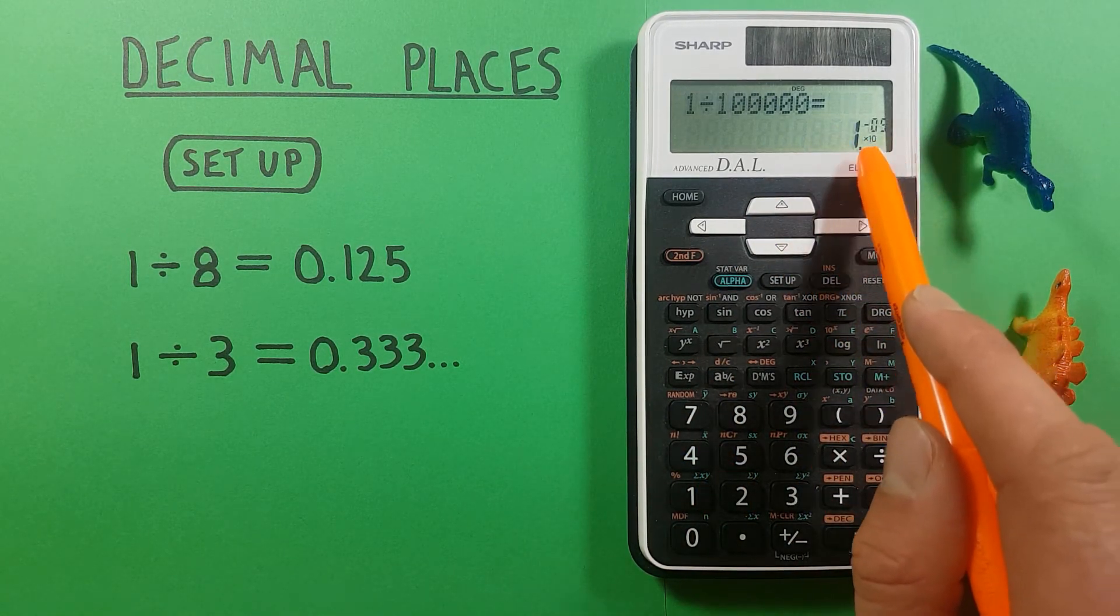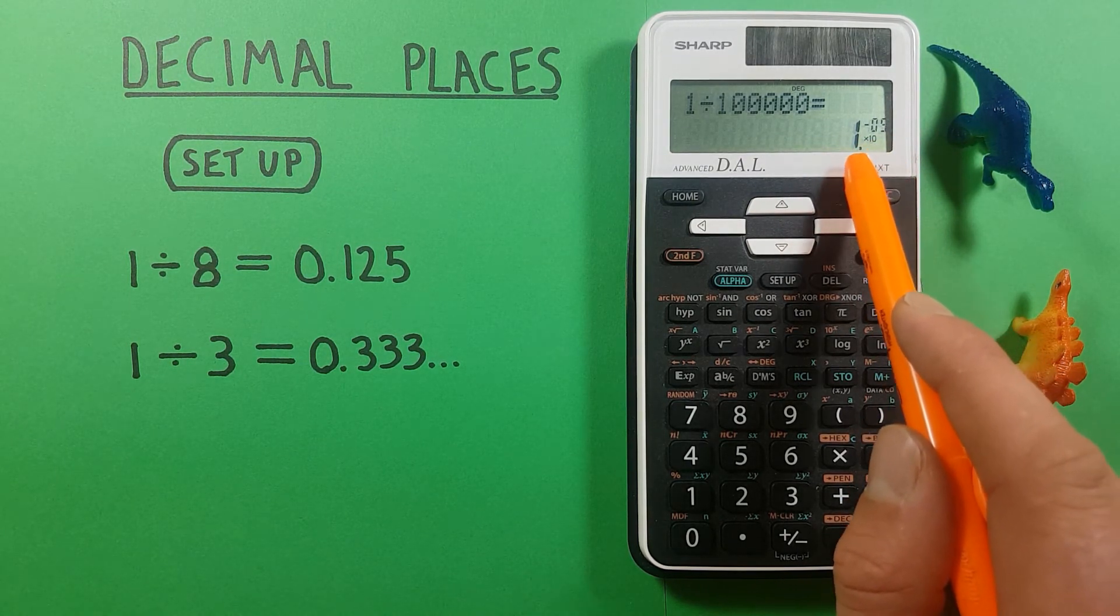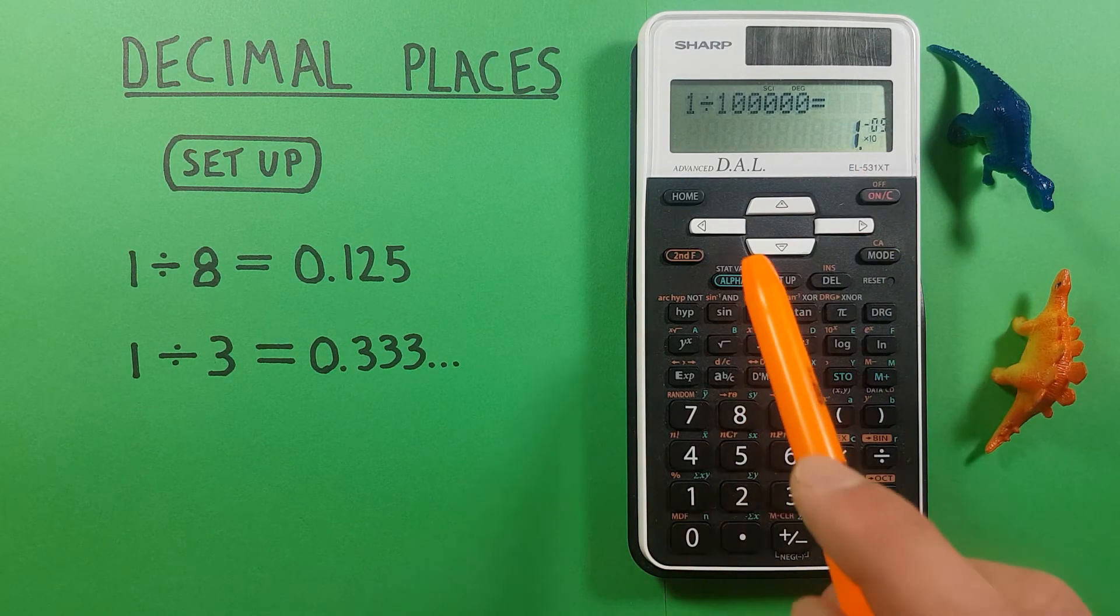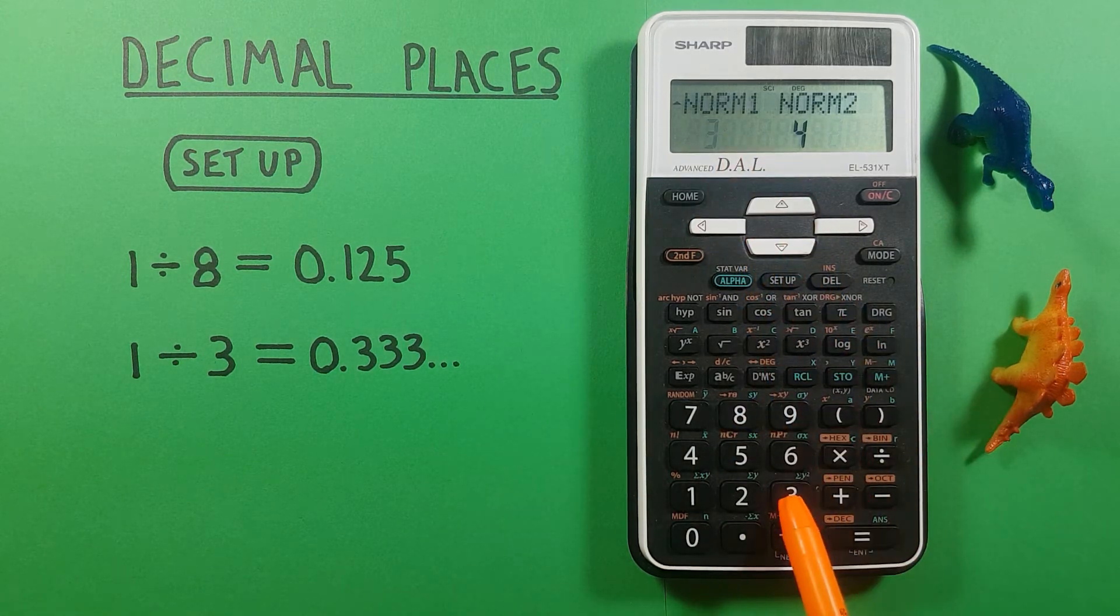we get that as a scientific notation result. That displays very small answers in this mode. So like I said I prefer normal mode one which we get to again by hitting number three.